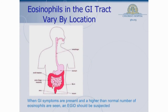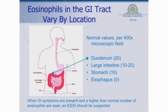Depending on where you are looking in the GI tract, the number of eosinophils that you see varies. The highest number tends to be in the duodenum, the first part of the small intestine, where you see on average about 20 eosinophils per high-powered field. The large intestine, or the colon, you see somewhere between 10 and 20 under normal circumstances. In the stomach, you see about 10 per high-powered field. And what's interesting is that in the esophagus, you generally don't see any eosinophils. That's the one area of the GI tract where seeing eosinophils for any reason implies something is going on — something that's not a normal situation.